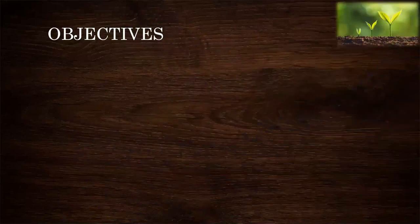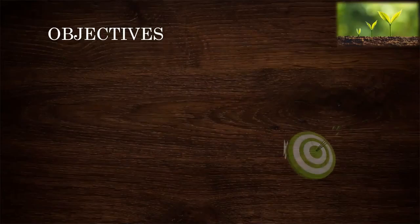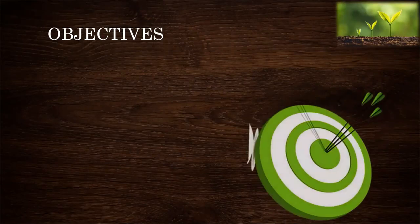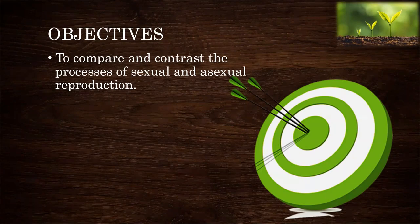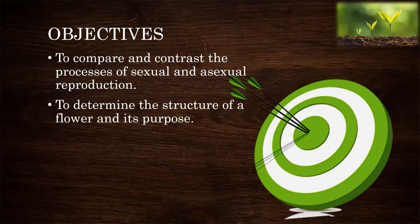Here are the objectives of this lesson: to compare and contrast the processes of sexual and asexual reproduction, and to determine the structure of a flower and its purpose.